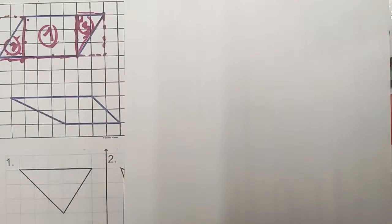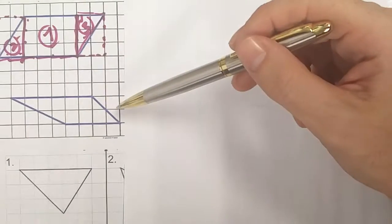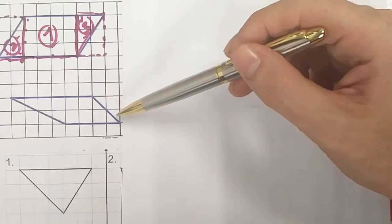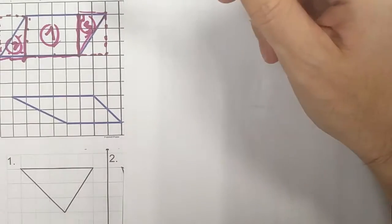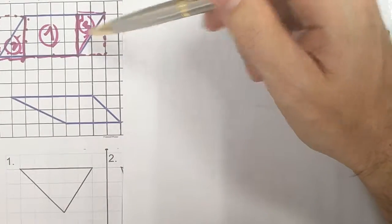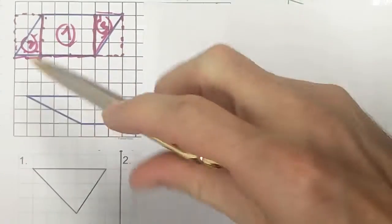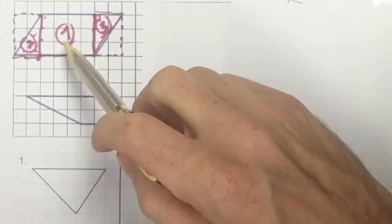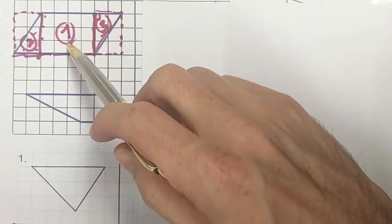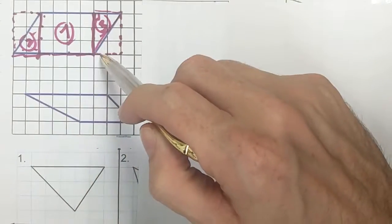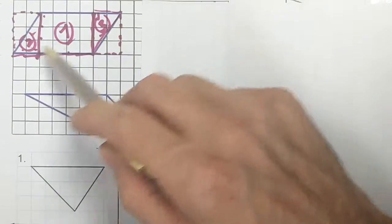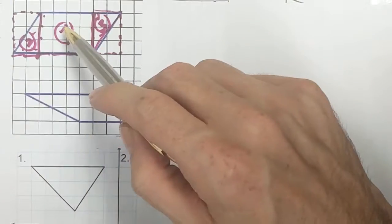All right, let's look at the second quadrilateral I have right here. In the first one, as a recap, we did the additive property where we found the area of the rectangle and the area of the two triangles, and then we added them all up together.